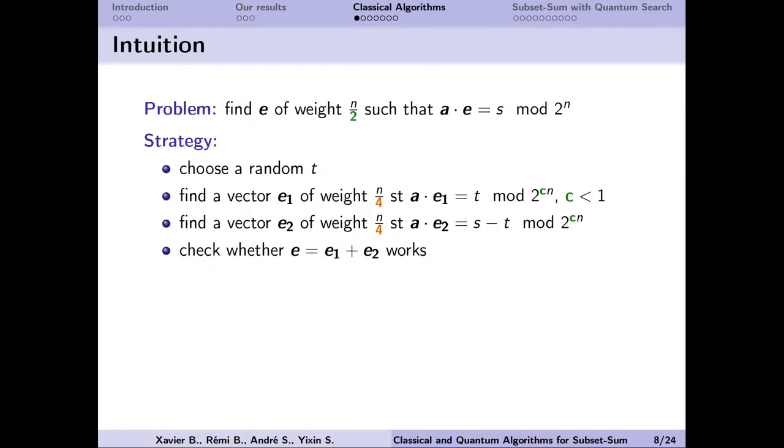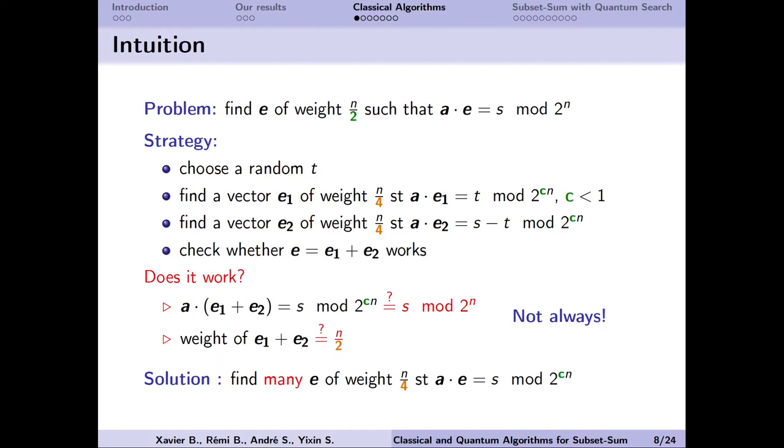I will now briefly try to explain the classical approach. We would like to find the solution e of weight n over 2. What we can do is to choose a random t and solve two easier subset sum problems presented here. They are easier because the Hamming weights of the vector that we are looking for is now n over 4 instead of n over 2. And the modulo is smaller. It is now 2 to the power cn, where c is a constant smaller than 1. Whereas for the original problem, it was 2 to the power n. When we have two solutions, e1 and e2, we need to add them together and hope that the sum is now a solution to the original problem.